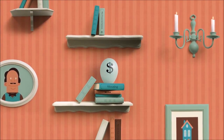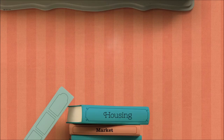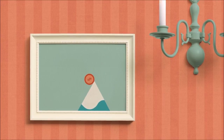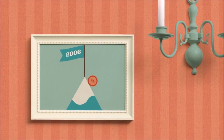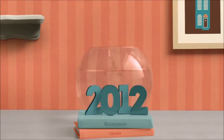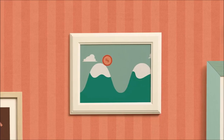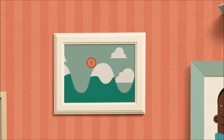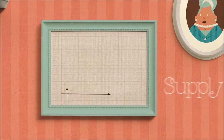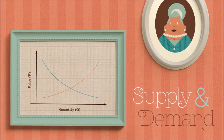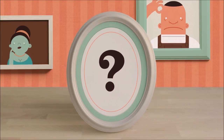Remember the huge housing market bubble burst? When housing prices peaked in 2006 and then hit bottom in 2012? So what makes prices go up and down like that? You could simply answer supply and demand and sound like you know what you're talking about. But what does that really mean?